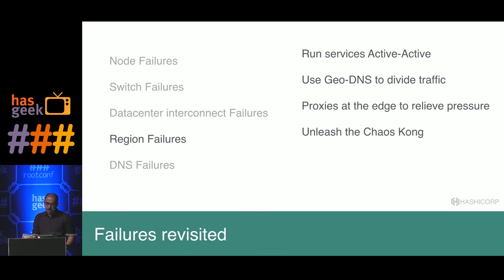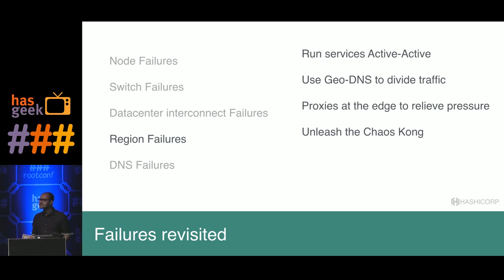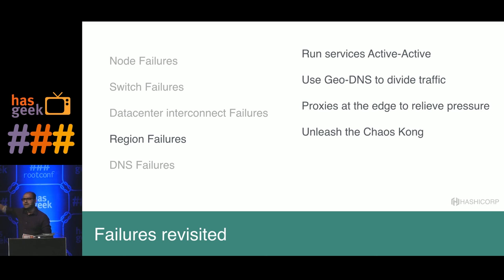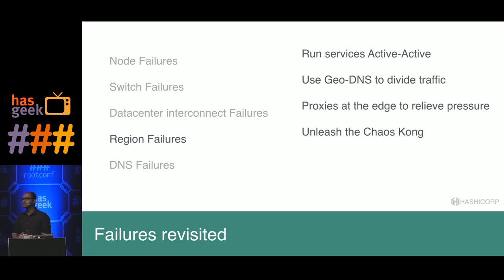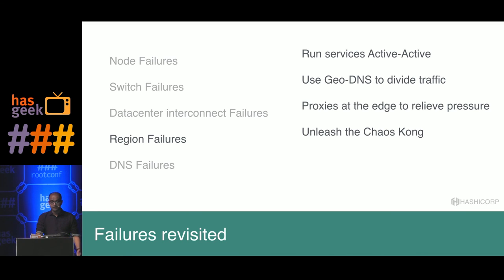For region failures, run services active-active. If US East 1 goes down, users should still get your service. Use a GeoDNS service — Dyn or Route 53 — to route users based on geographic location to specific AWS regions or on-prem data centers. DNS should not be a black box routing everything to one place; it's crucial to move traffic from one data center to another. Unleash something like Chaos Kong to test whether you can handle region failures.